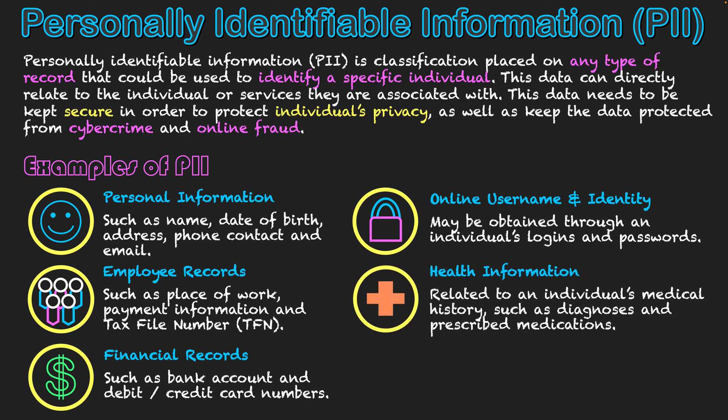The next category is health information, and a lot of records are now stored about health online. This is data related to an individual's medical history — what diagnoses they've had, what medical issues they've had, what diseases they may have had, as well as prescribed medications. Prescriptions are often created electronically these days and sent out as SMS for people to use when they go to a chemist. So all that information is stored in online databases relevant to an individual.